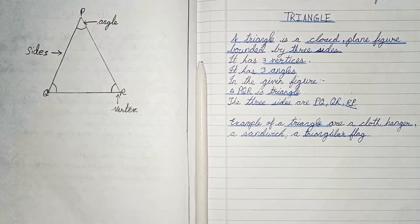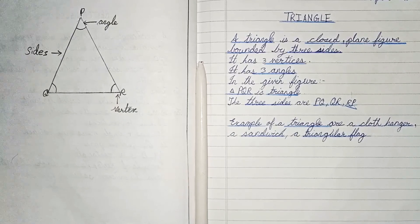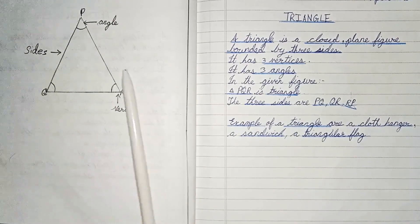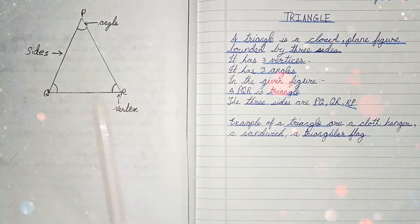Triangle is a plane figure which is an example of a polygon also. So what is a triangle? Triangle is a closed plane figure bounded by three sides. It has three vertices and three angles.